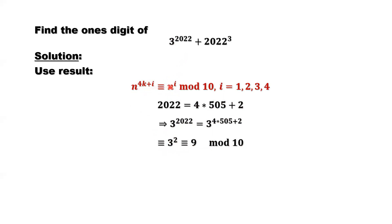You can see, 3 to the power of 2. 3 to the power of 4k plus i, 3 squared is 9. So the last digit is 9. The first part, the last digit, that's 9. The second part that we already discussed, that's 8.